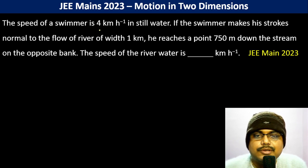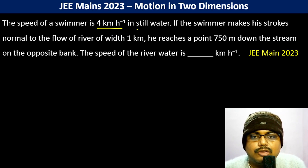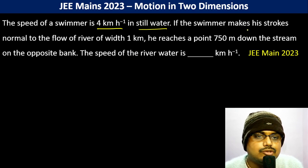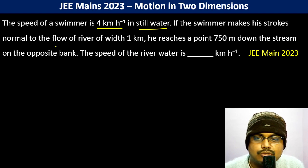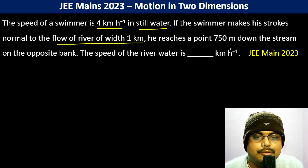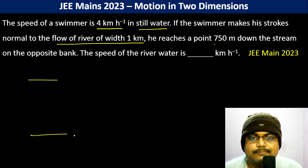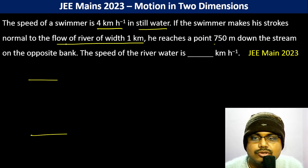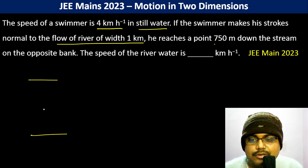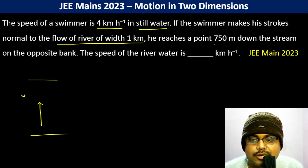The speed of a swimmer is 4 km/h in still water. The swimmer makes his strokes normal to the flow of the river, which has a width of 1 kilometer. So basically, the swimmer is going in this direction with 4 km/h.